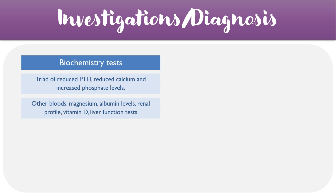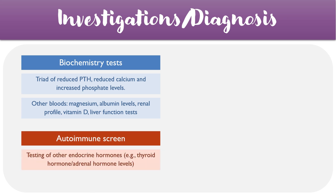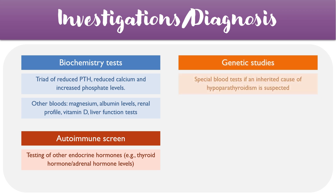Aside from this, we can also look towards autoimmune screening, looking for other endocrine hormone conditions — for example, thyroid hormone or adrenal hormone deficits. In some instances, it might be worth conducting genetic studies, especially if an inherited cause of the condition is suspected.